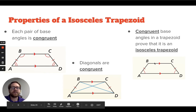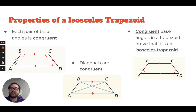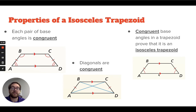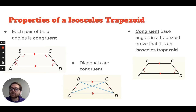Lastly, congruent base angles in a trapezoid prove that it's an isosceles trapezoid. It works in reverse: if we have a trapezoid where the base angles are congruent, then we know it's an isosceles trapezoid, which proves the legs are the same length. As with all the properties we've been learning, when looking at a problem you want to identify what it's talking about — for example, if it's about base angles, look at the properties of a trapezoid that address base angles.